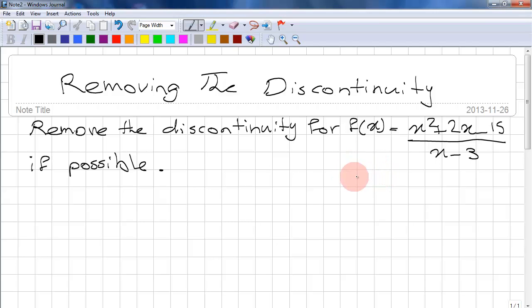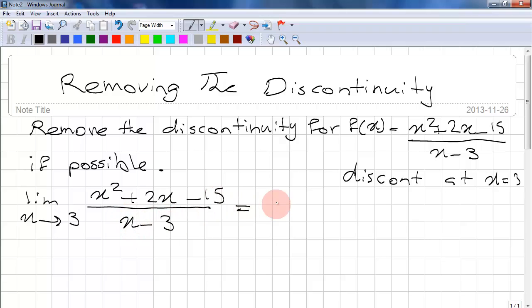So we take the limit of this function when x approaches 3. Limit of f(x) when x approaches 3: x squared plus 2x minus 15 over x minus 3 equals the limit of the function when x approaches 3.